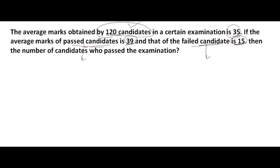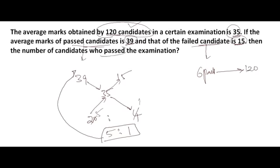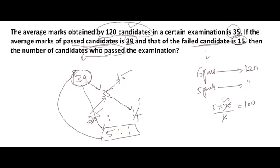We apply the allegation technique: individual group averages are 39 and 15, and by mixing them we get 35. Taking differences diagonally: 39 minus 35 is 4, and 35 minus 15 is 20. The ratio is 20 to 4, which simplifies to 5 to 1, giving 6 total parts corresponding to 120 candidates. Passed candidates correspond to 5 parts, so the answer is 5 times 120 divided by 6, which equals 100. There are 100 students who passed.